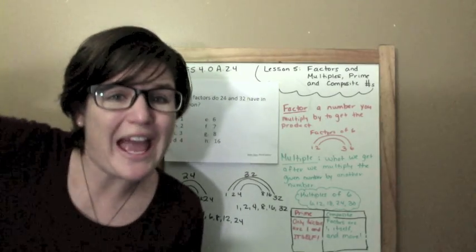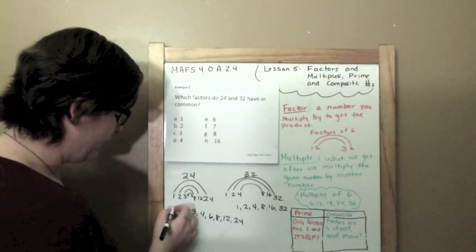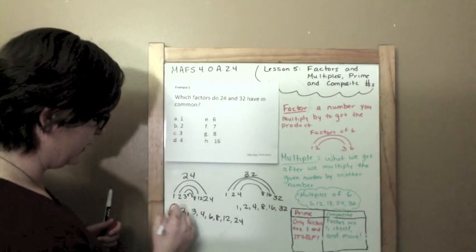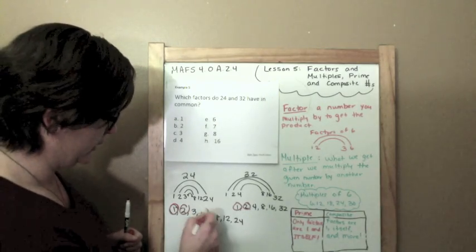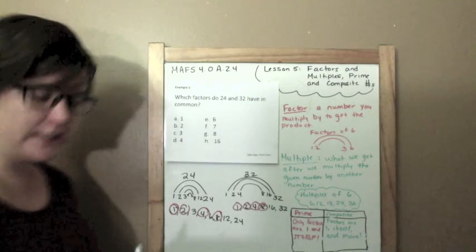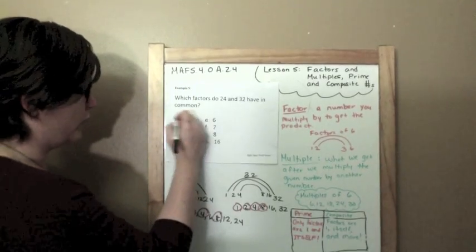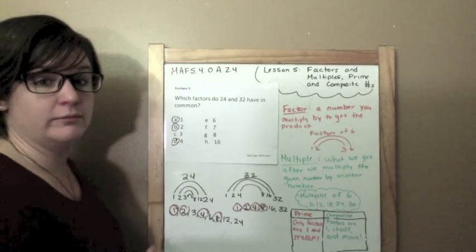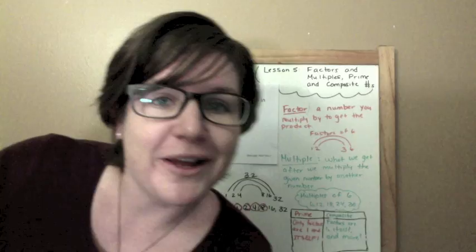But the question is asking us, what do they have in common? They have 1 in common. I'm going to use the marker. They have 1 in common. They have 2 in common. They have 4 in common. They have 8 in common. And that is it. So, let me go to the question and get the answer. 1, yup. 2, yup. 4, yup. 8, yup. We're done.